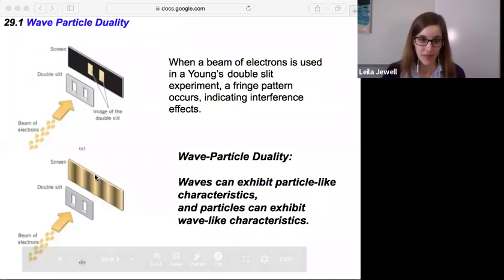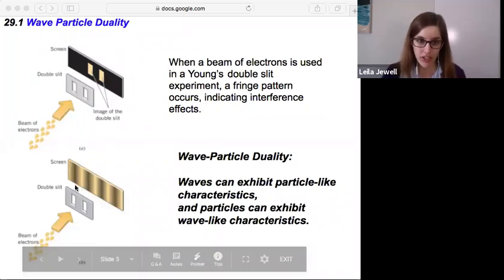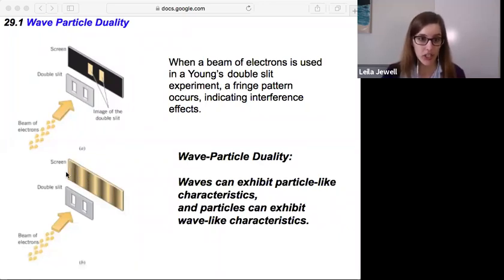There are a bunch in the middle, and there are regions where no electrons hit, and then more electrons, and then no electrons, and then more electrons way over here on the side. Like, why are electrons going all the way over there?